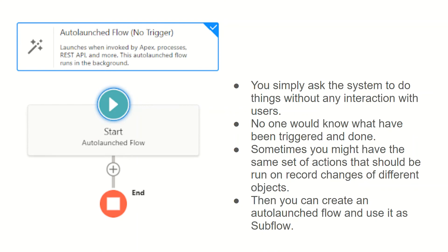Next is auto-launched flow. In this flow you simply ask the system to do things without any interaction with users. It can be invoked from Apex, processes, REST API, or more, and no one would know it was triggered. Sometimes you might have the same set of actions that should run for record changes across different objects — you can create an auto-launched flow and use it as a sub-flow. You can trigger it from Process Builder passing a record ID as input, or call it as a sub-flow from a record-triggered flow when particular criteria are met.